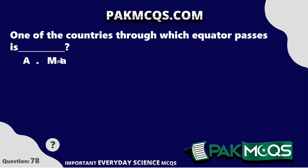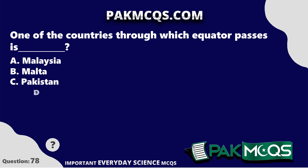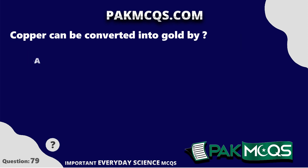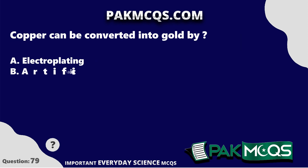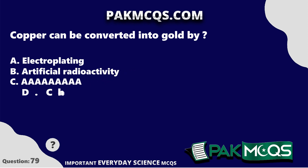One of the countries through which the equator passes is Kenya. Copper can be converted into gold by artificial radioactivity.